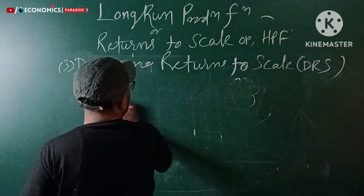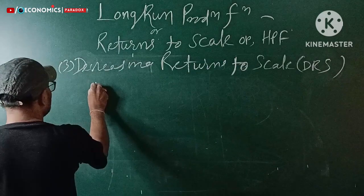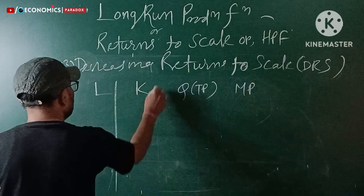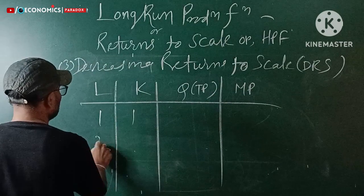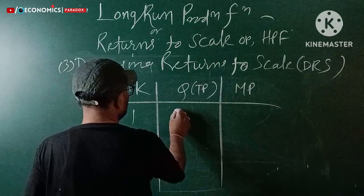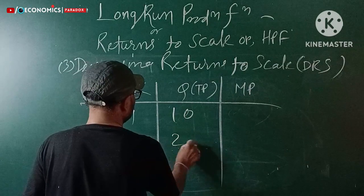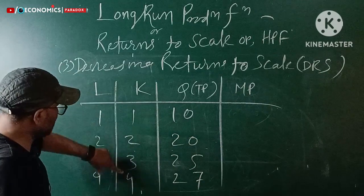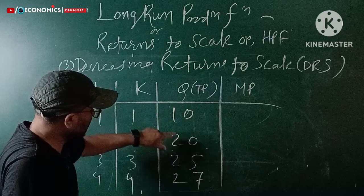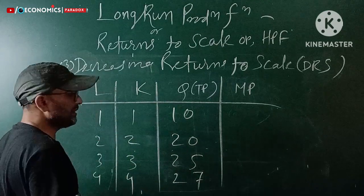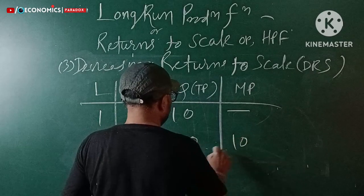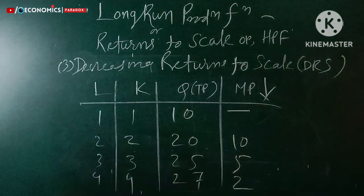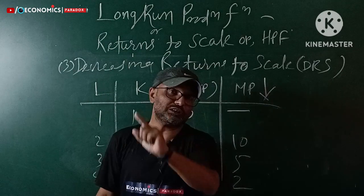In DRS, the marginal product (MP) definitely diminishes. Looking at the table: output values might go twenty, twenty-five, twenty-seven — increasing at a diminishing rate. The MP is positive but decreasing. Total product increases, but at a diminishing rate. This is because in DRS both factors increase at the same rate but output grows less proportionately.